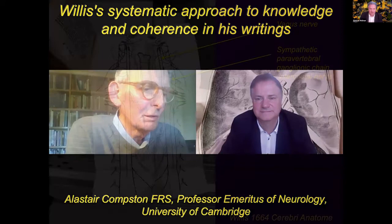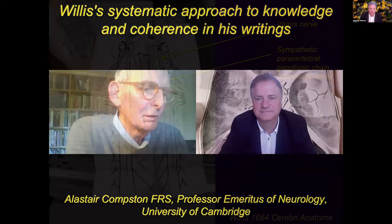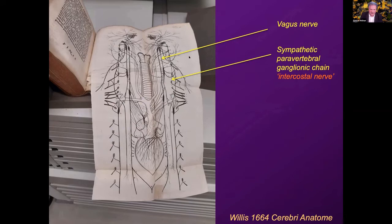Willis had an amazing legacy. If you look at some of these illustrations — for instance, the autonomic nervous system — you can see the recurrent laryngeal nerves, the right and left differences, which we use to challenge medical students in anatomy tutorials, and many other details which you could use in these drawings even for teaching today. He used slightly different nomenclature — he used the sympathetic paravertebral ganglionic chain as 'intercostal nerves' — but otherwise this drawing could be used today to teach the autonomic nervous system.